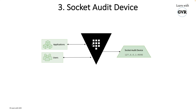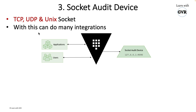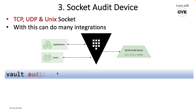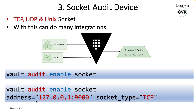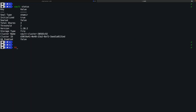The socket audit device sits between the Vault server and a receiving application like Elasticsearch, Splunk, or CloudWatch running on a port such as 9090. Vault supports TCP, UDP, and Unix sockets. This enables many kinds of integrations. The command is 'vault audit enable socket' with an 'address' parameter specifying where to send the data. For more parameters, check the documentation or run 'vault audit -h' to see enable, disable, and list options.